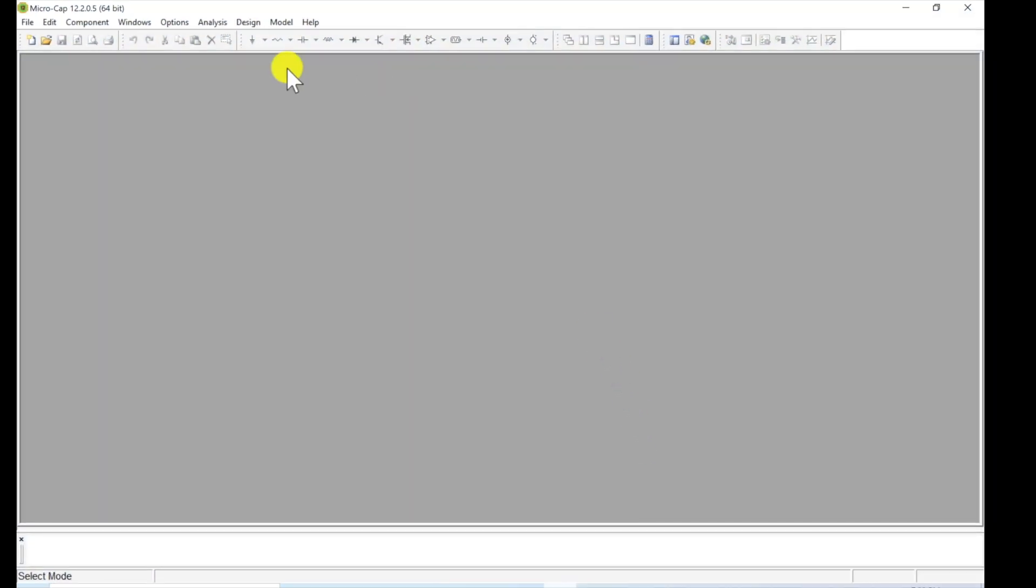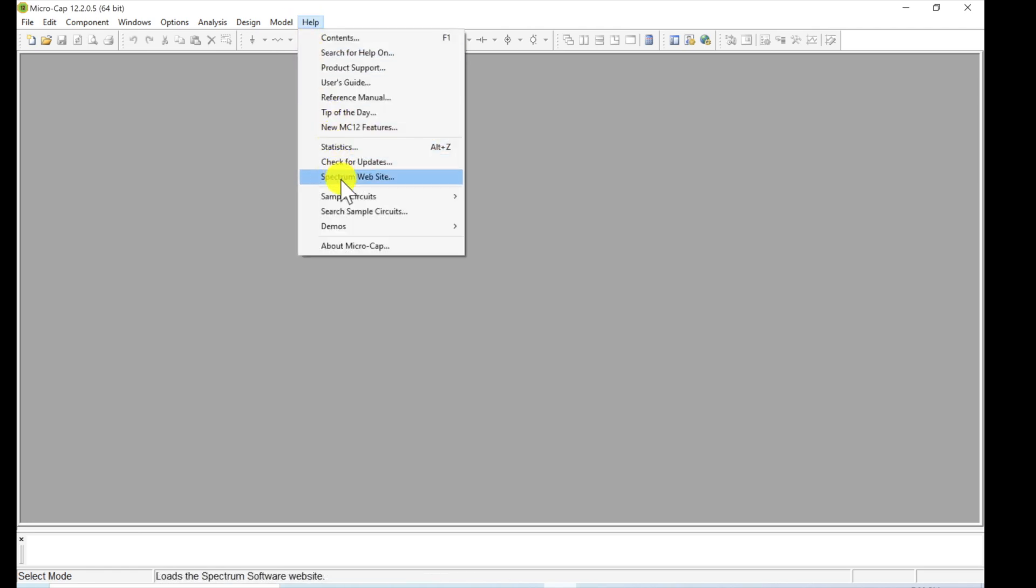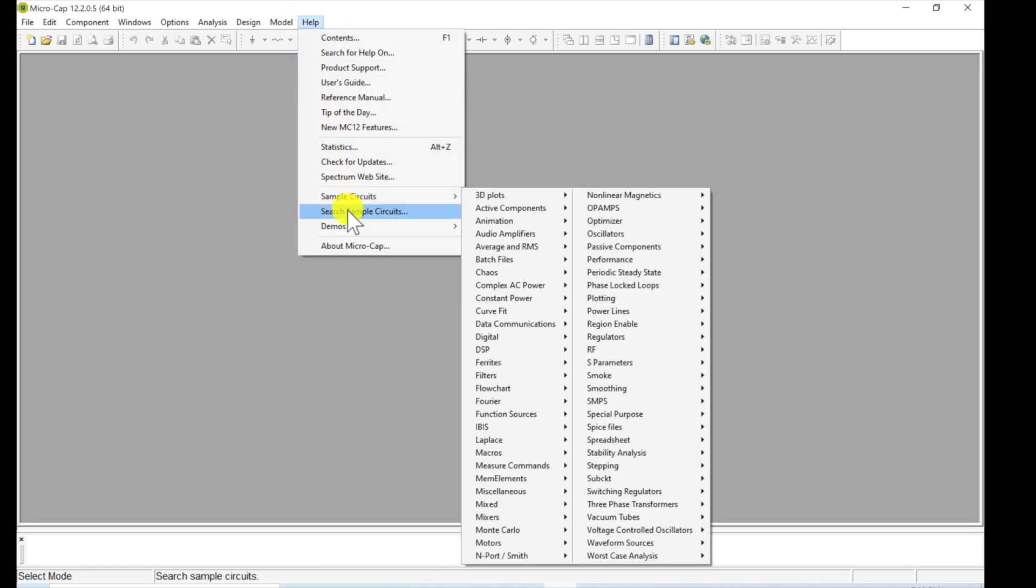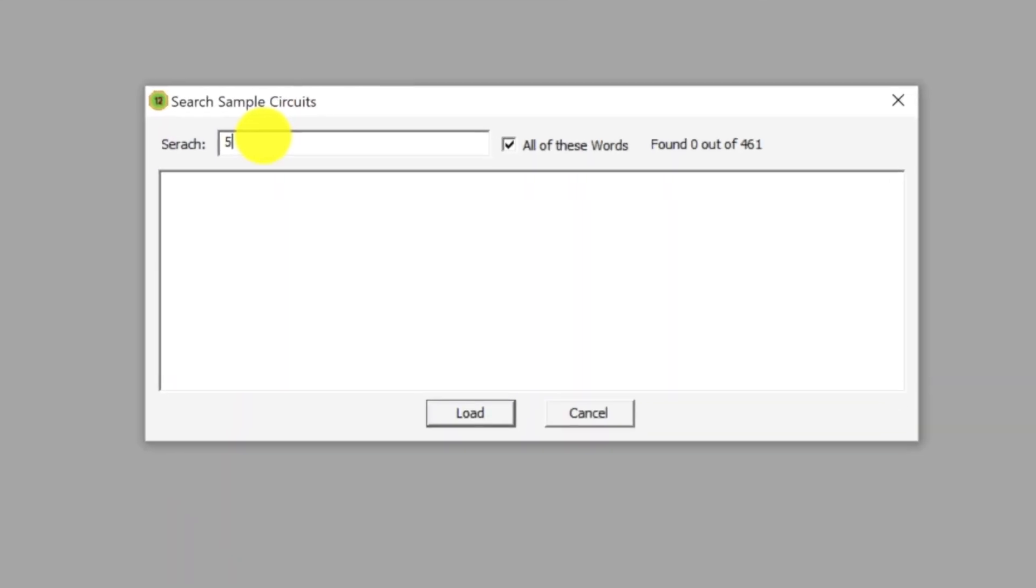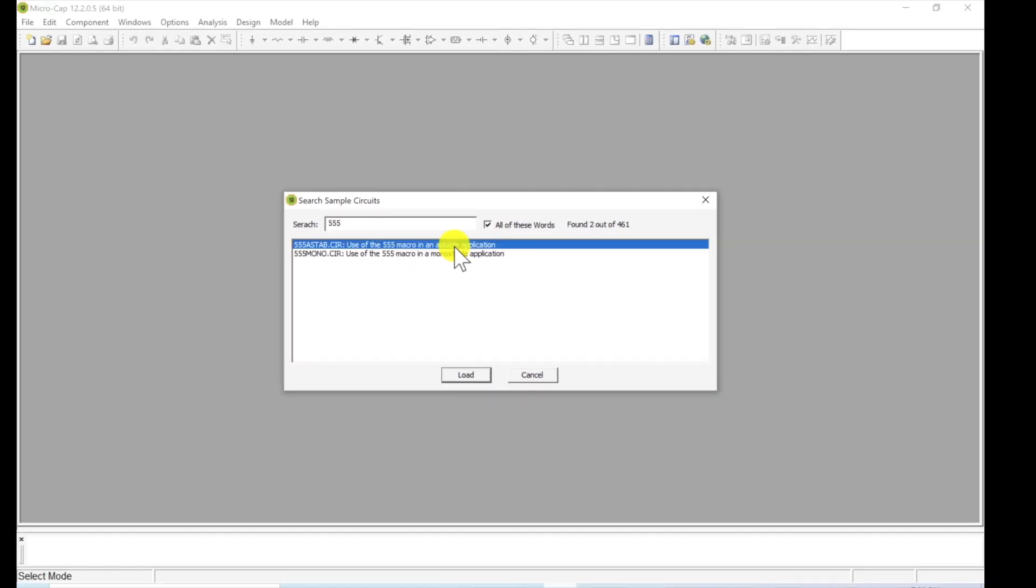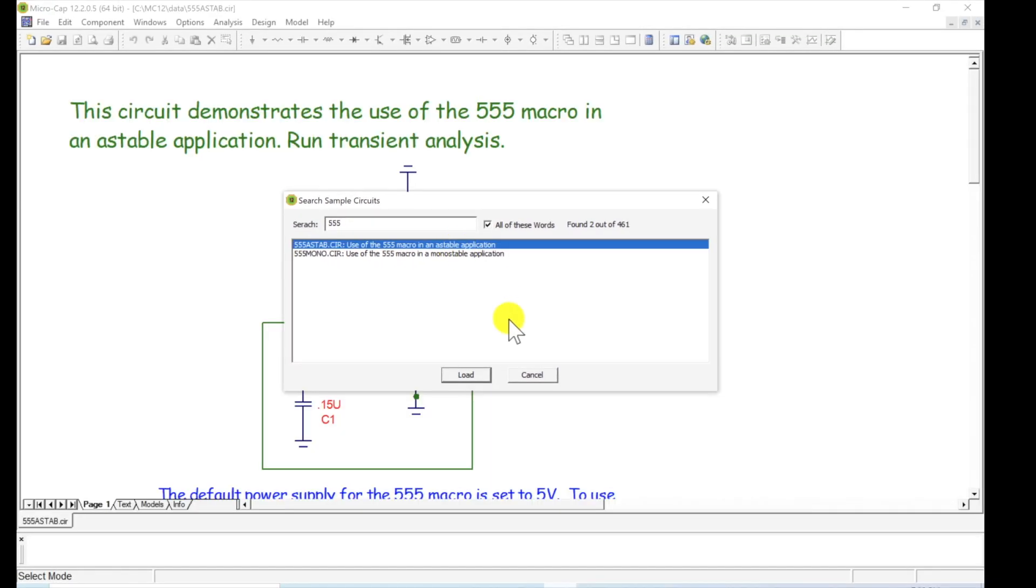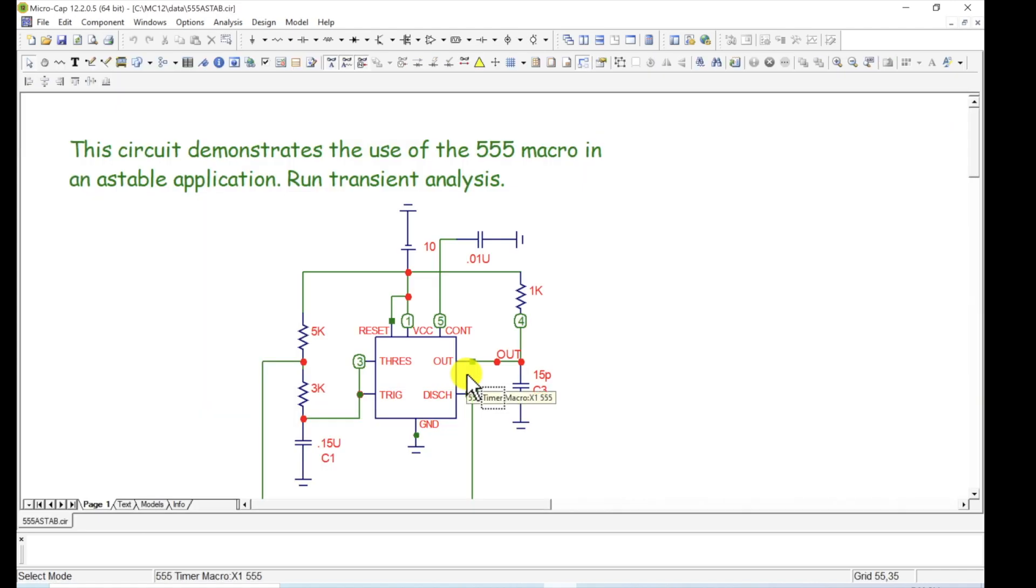Okay, here we are in MicroCap. We're going up here to the help menu. We're going to go to search sample circuits and we're going to type in 555 for 555 timer. And you have both versions, depending on how you connect it, astable or monostable. We'll just go for the astable version, load that in.